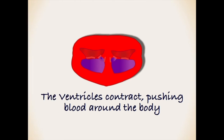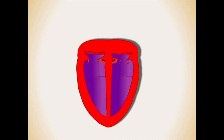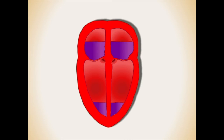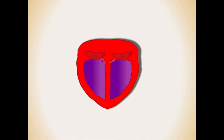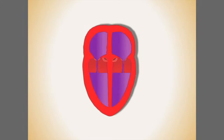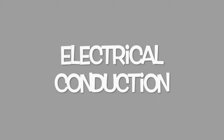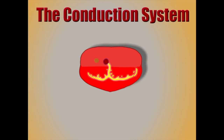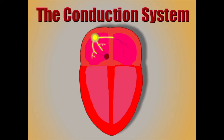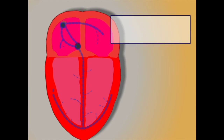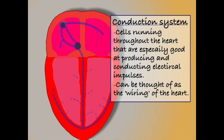The heart then relaxes and the process repeats. The cardiac cycle is controlled and regulated by the heart's electrical conduction system, which is made up of specialist cells that run throughout the heart, transmitting the electrical impulses that trigger the cardiac muscle to contract.